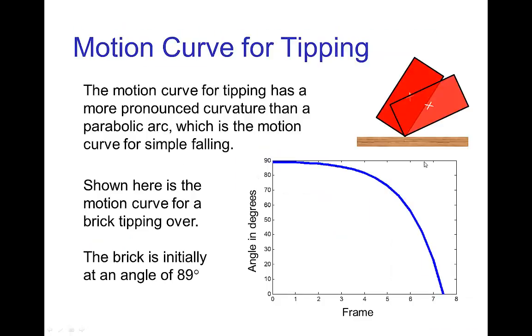Now if we looked at the motion curve for something tipping over, here this is the motion curve for a brick which is just one degree off of the balance point. So the center of the brick is turned just one degree from the vertical.